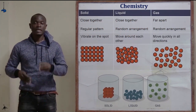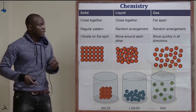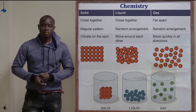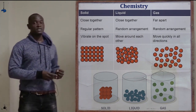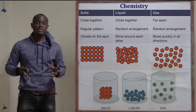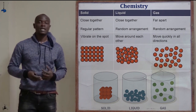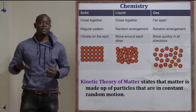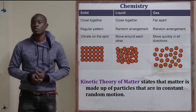This includes solids, liquids, and gases. In form one chemistry, we studied the three states of matter. We saw that solid particles are closely packed together, liquid particles are fairly packed together, and gas particles are very far apart.